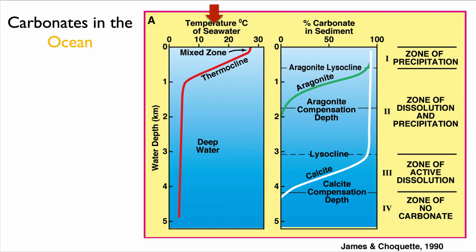On this plot, temperature is on the left and percent carbonate in the sediments is on the right. The vertical axis represents depth and the horizontal axis represents temperature. You can see a nice red line representing the thermocline. The surface ocean can be quite warm in tropical and subtropical seas, but temperature drops as you go deeper. The maximum water depth on this plot is five kilometers.